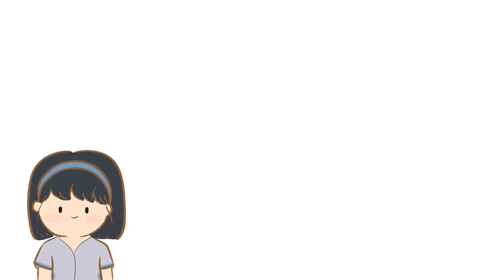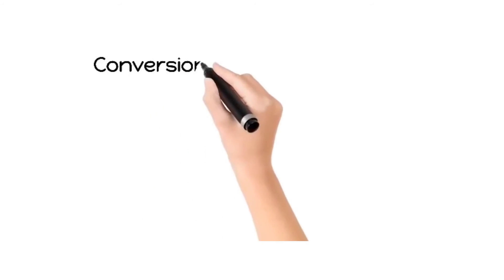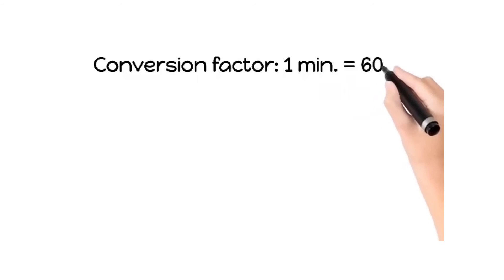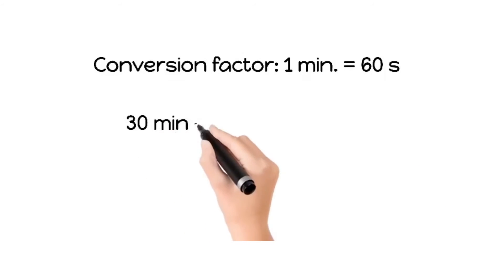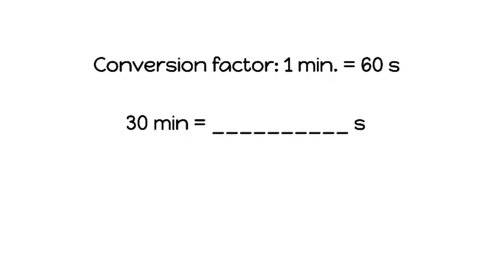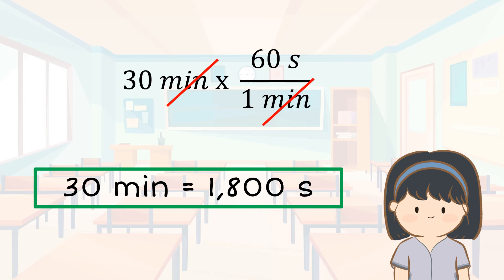Next, let's talk about time. Suppose you have a time interval in minutes, and you want it in seconds. The conversion factor is 1 minute equals 60 seconds. It's that simple. Now, you can easily convert time intervals between minutes and seconds.